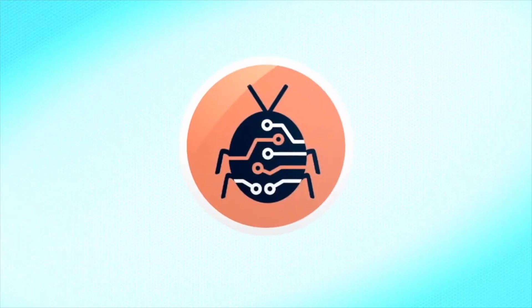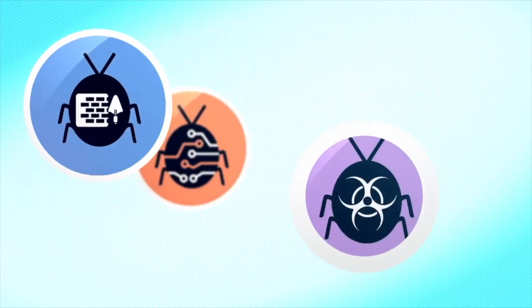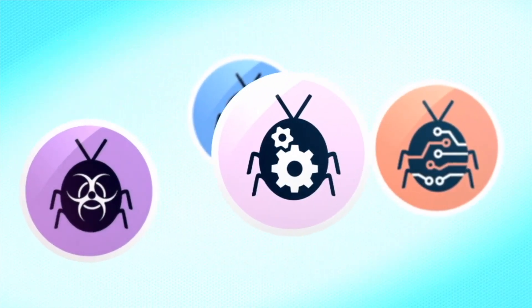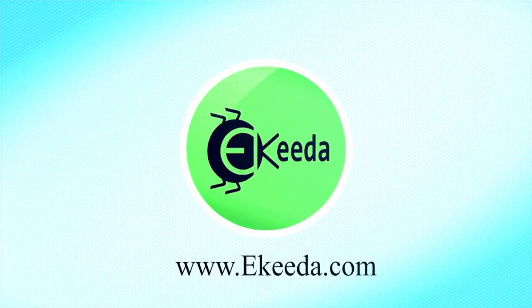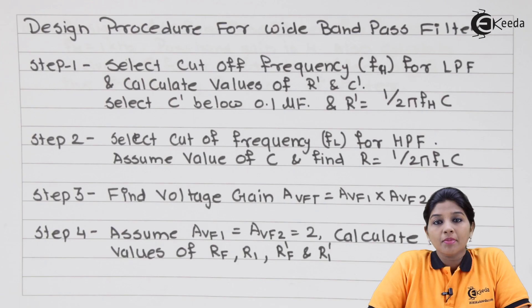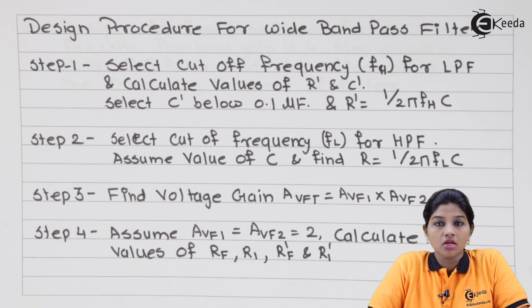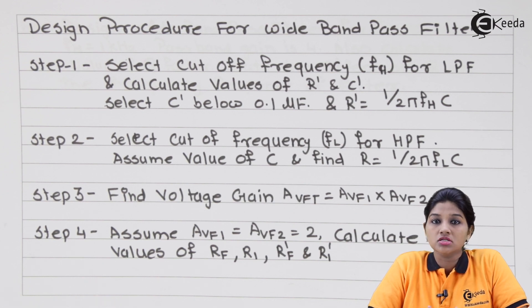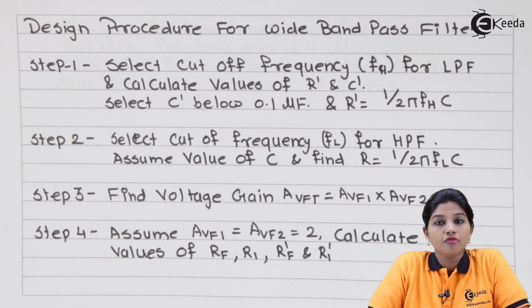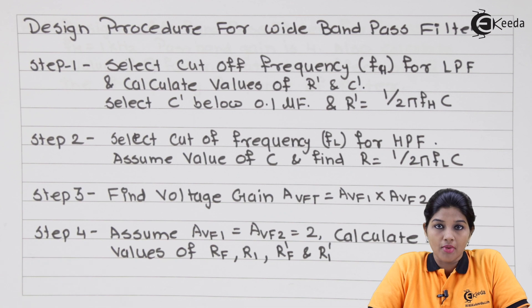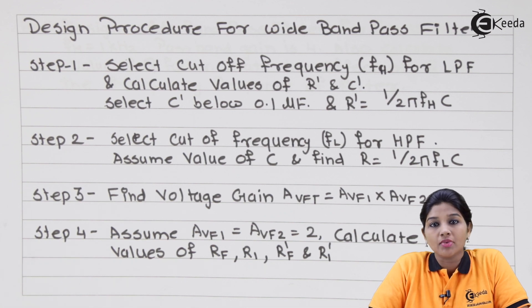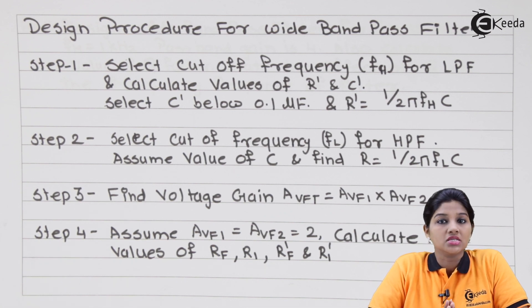A band pass filter is basically a filter which is used to pass only a particular band of frequency, and it rejects or attenuates all the frequencies beyond that band. Therefore, in case of a band pass filter, there is one pass band and two stop bands. Based on the pass band, there are two types of frequencies: fh and fl.